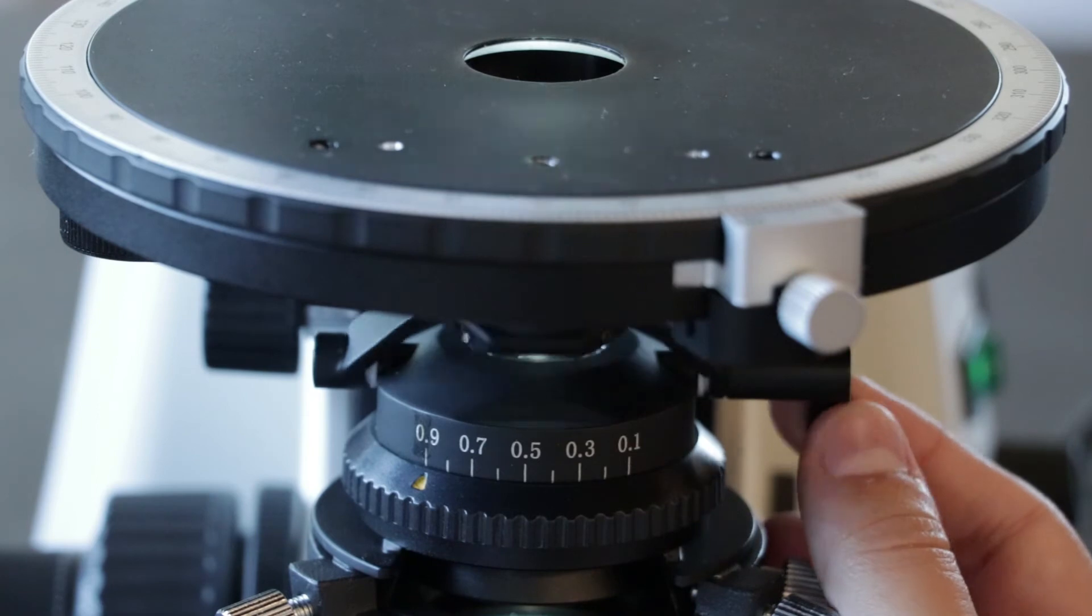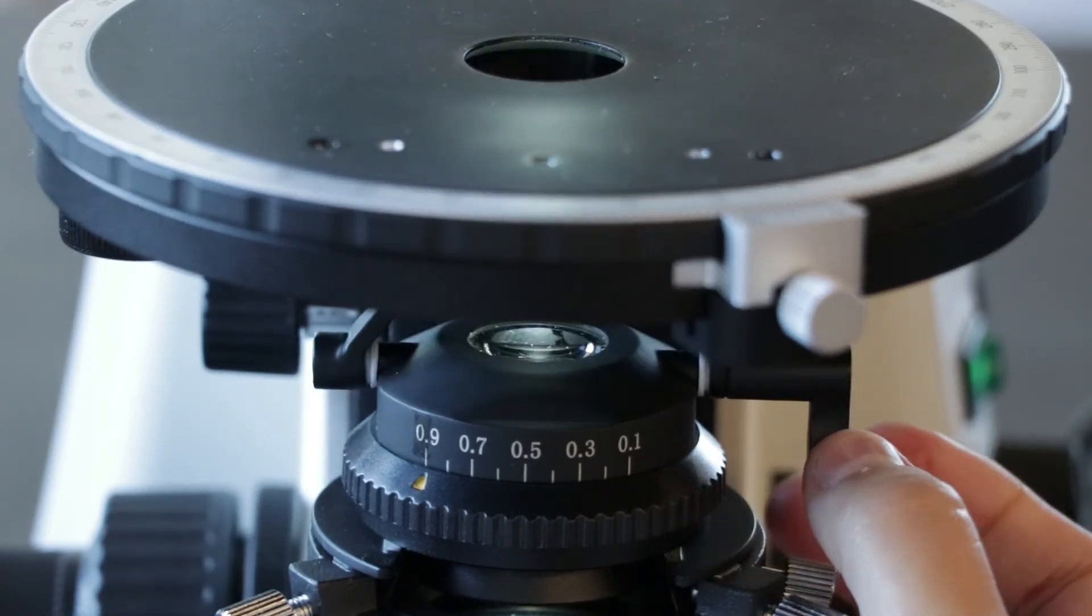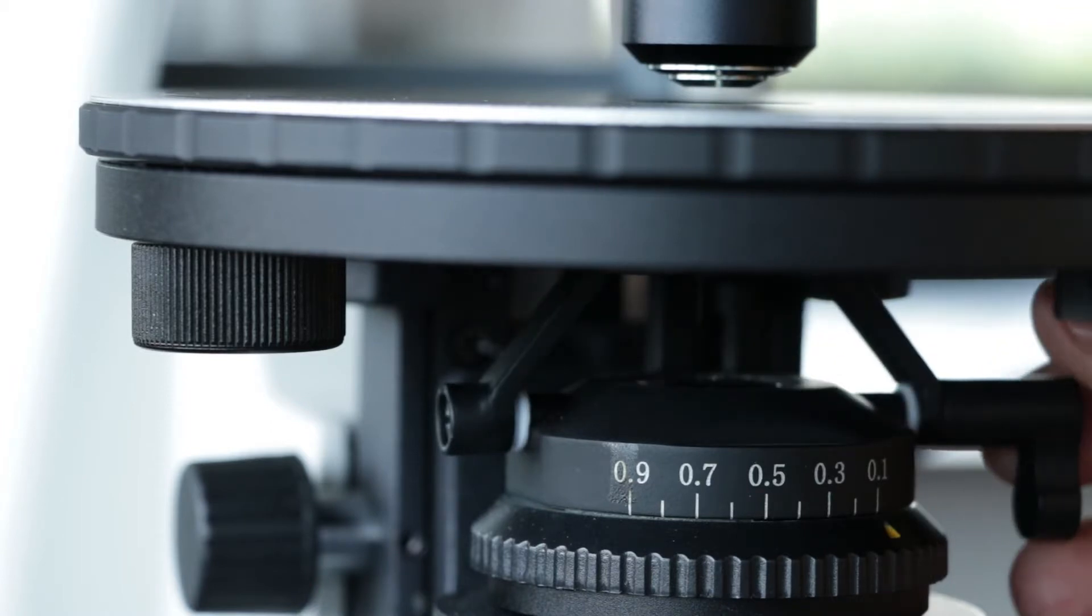The condenser lens can be moved into place using the swing-out lever. For some microscopes, the lever is on the left side.